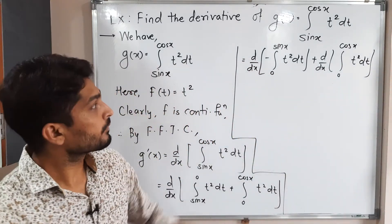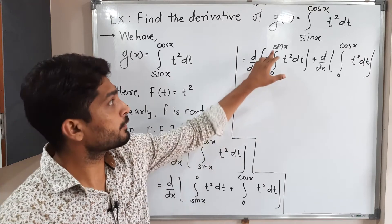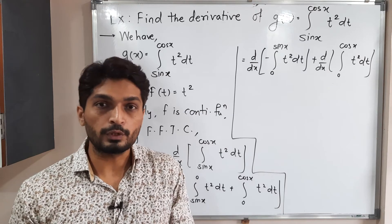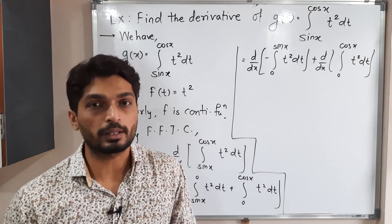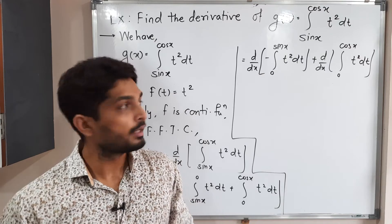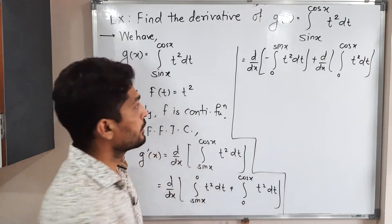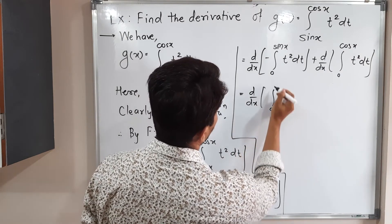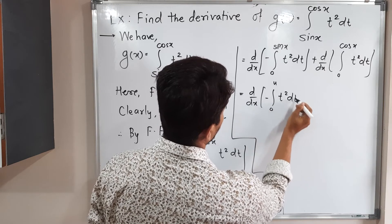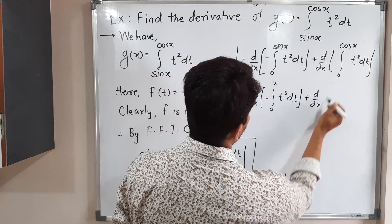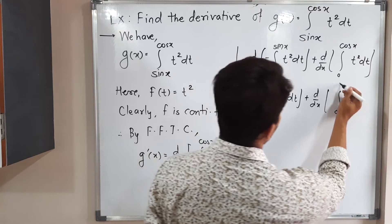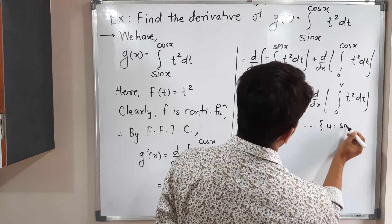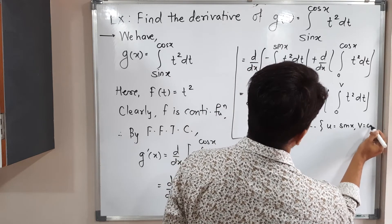After that, we can apply the First Fundamental Theorem of Calculus, but here we have a function in the upper limit instead of a single variable. As seen in previous videos, we use substitution in this case. I am going to put u equal to sine x and v equal to cos x. So we have: minus the derivative of the integral from zero to u of t squared dt, plus the derivative of the integral from zero to v of t squared dt, where u equals sine x and v equals cos x.